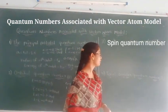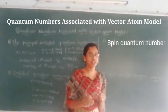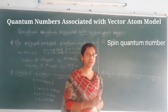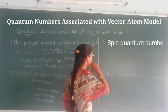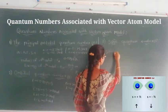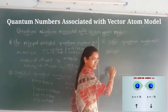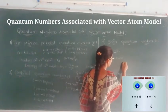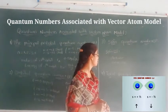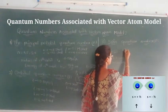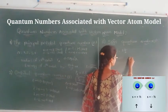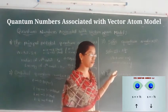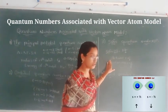The third quantum number is the spin quantum number, denoted with s. When an electron moves in its orbit, it also has a spinning motion — either clockwise or anticlockwise. The spin quantum number values are +½ for clockwise motion and −½ for anticlockwise motion.